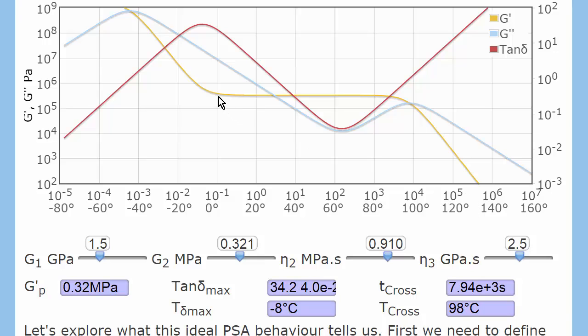So, we have in this curve, G prime, the elastic modulus. And at low temperatures, or at high frequencies, the PSA will have a modulus typical of any polymer,